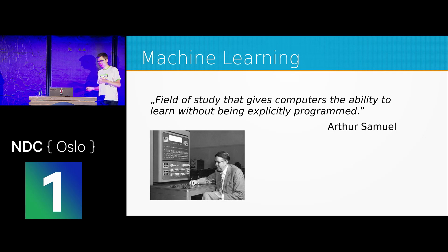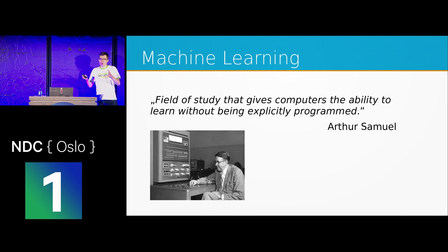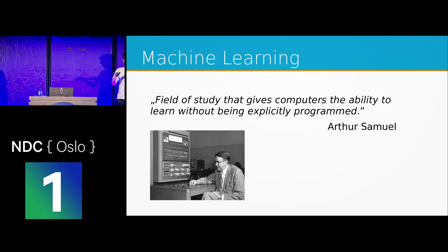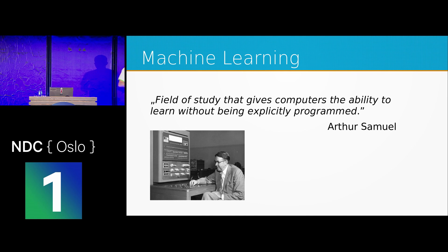Let's start with some simple definitions. The first one by Arthur Samuel, who is like a founding father of AI. According to him, machine learning is a field of study which gives your computers and programs the ability to learn without being explicitly programmed. For example, if you want to write an algorithm that recognizes your friend on a photo, it's quite hard to use imperative-style programming. And Arthur Samuel is shown playing checkers with a computer that was able to learn how to play checkers by playing with human players.